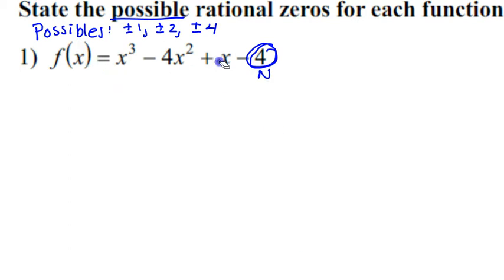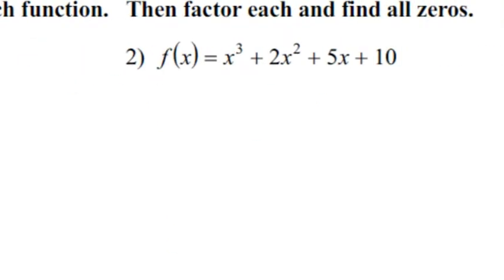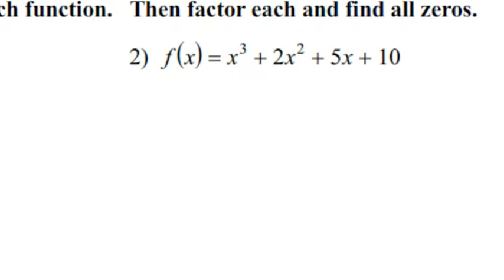But so now to find the actual zeros, I could use my calculator and find some, or I could use some of these possibles and synthetic, but I don't have to do any synthetic division at all, why? How can I factor this? Because you've got your 3. Grouping. Grouping.